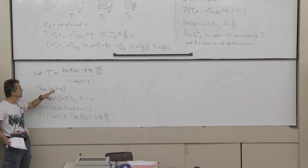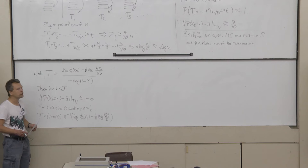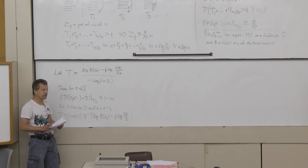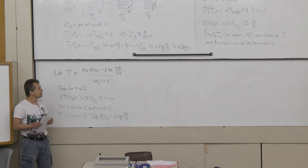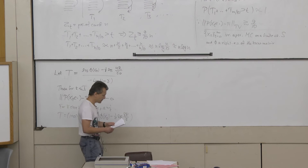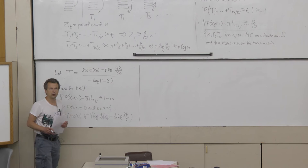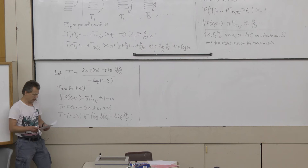This is a result I have had very much use for, which is why I want to introduce it. Let's now see how it can be used to get the lower bound of order N³ log N for the neighbor transposition shuffle.